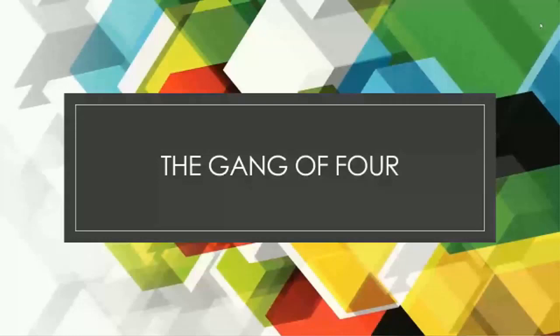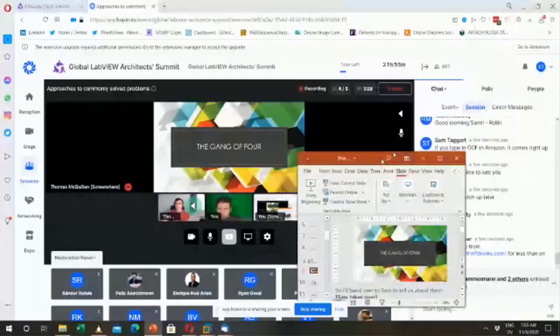The Gang of Four refers to a book called Design Patterns with four authors. It has 23 design patterns divided into three groups: how we create objects, how we compose them, and how they interact. Stefan Lamans put me onto a book called Dive Into Design Patterns — at refactoring.guru it's on sale for $10. It's a newer take on the same patterns with better examples. The original book is about 20 years old and a dull read. Dive Into Design Patterns is highly recommended, though it's ebook only.